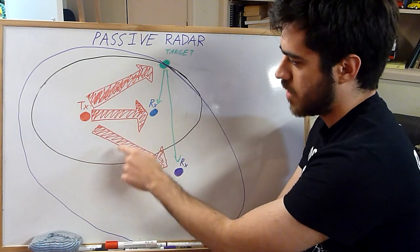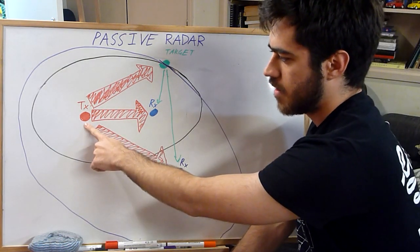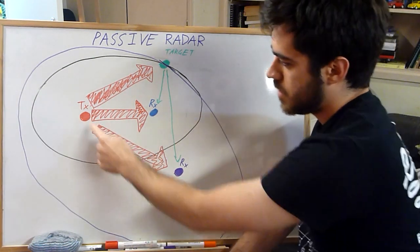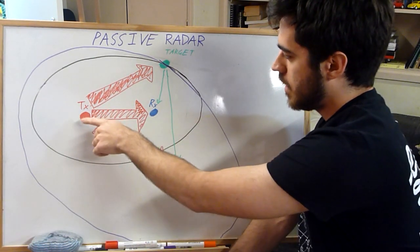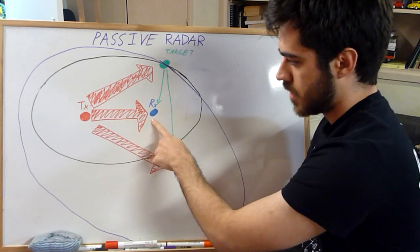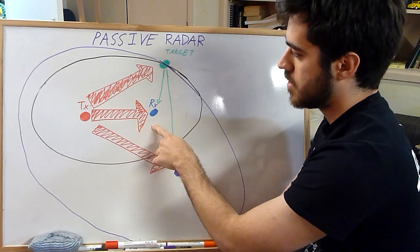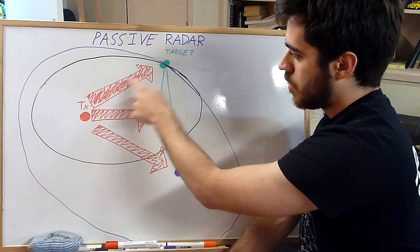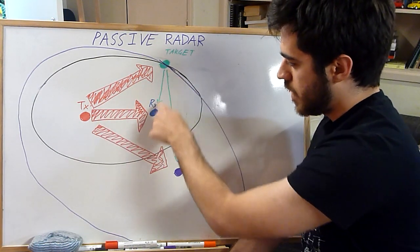So here's the basic concept. If we have some big transmitter here, say it's on Mount Coot-tha, a big digital radio transmitter, it's shooting out lots of energy. That's coming to my receiving antenna, so I'm just receiving the direct path signal. Then say there's an aeroplane here, a target, so it goes up there and a little bit of it bounces back towards my antenna.